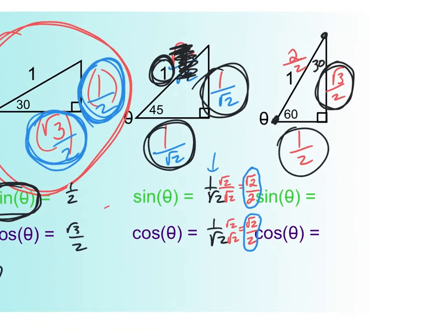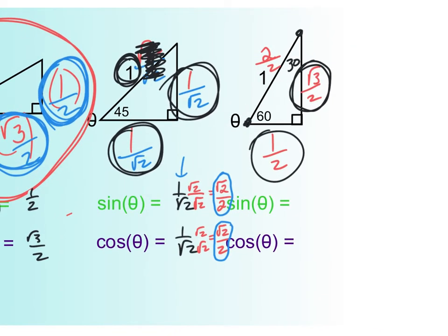Last but not least — the sine of the 60-degree triangle. Sine of 60 is opposite over hypotenuse, and again our hypotenuse is one, so it's just root three over two. And cosine of 60 is one half.